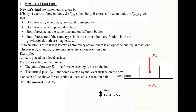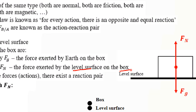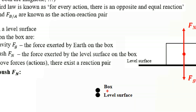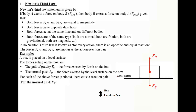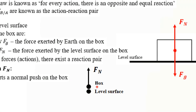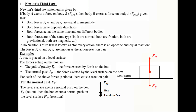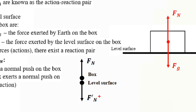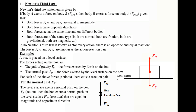The normal push is the force due to the interaction between the level surface and the box. The level surface exerts a normal push on the box, F_N, which is the action. Therefore, the box exerts a normal push on the level surface, F'_N, which is the reaction. These two forces act on different bodies, are equal in magnitude, opposite in direction, act at the same time, and are of the same type — a normal push.